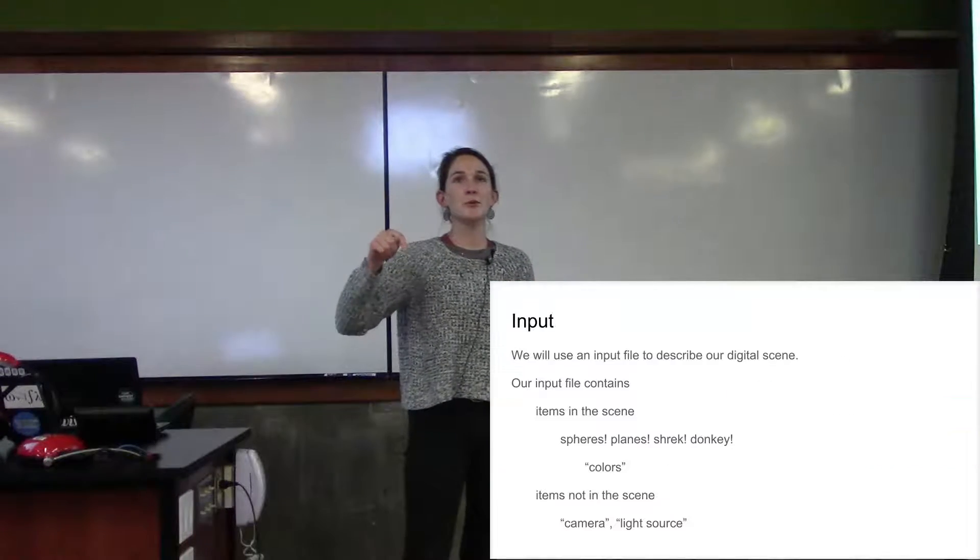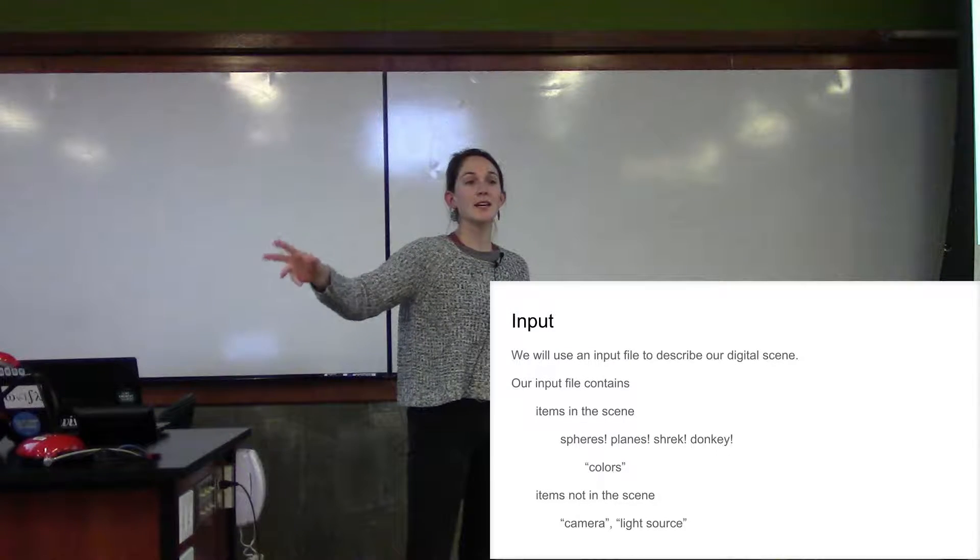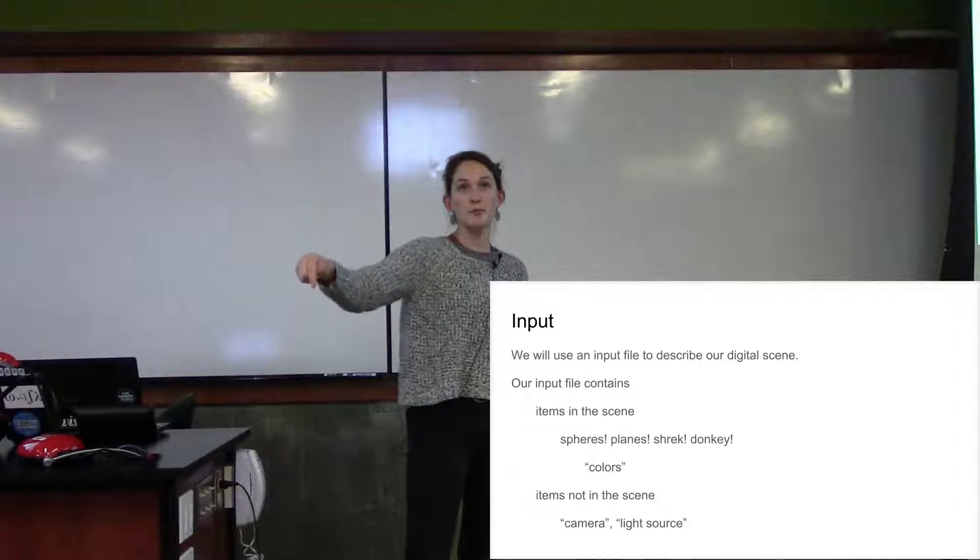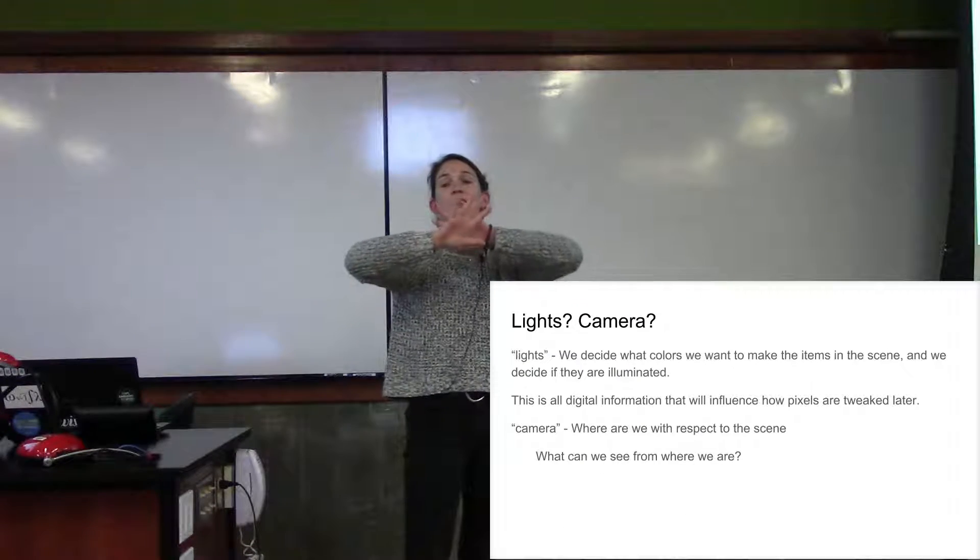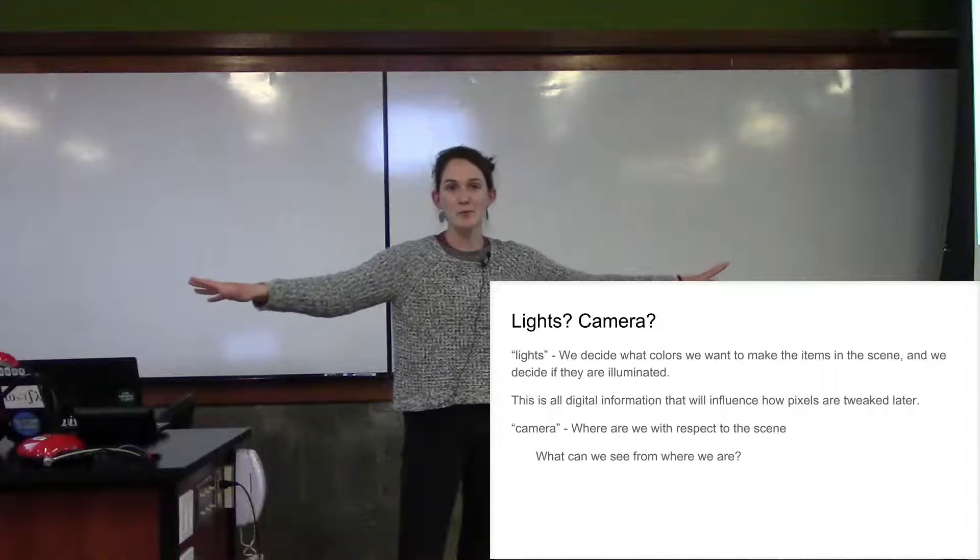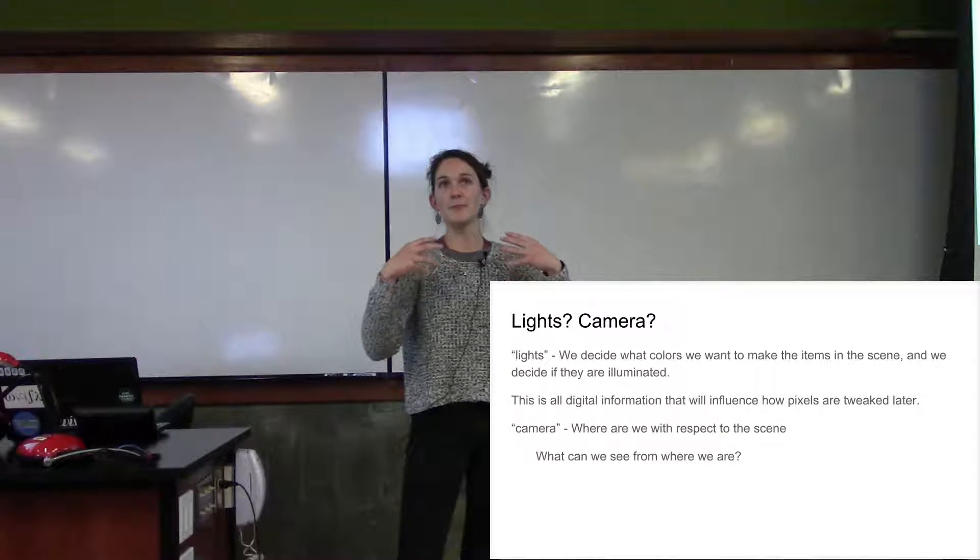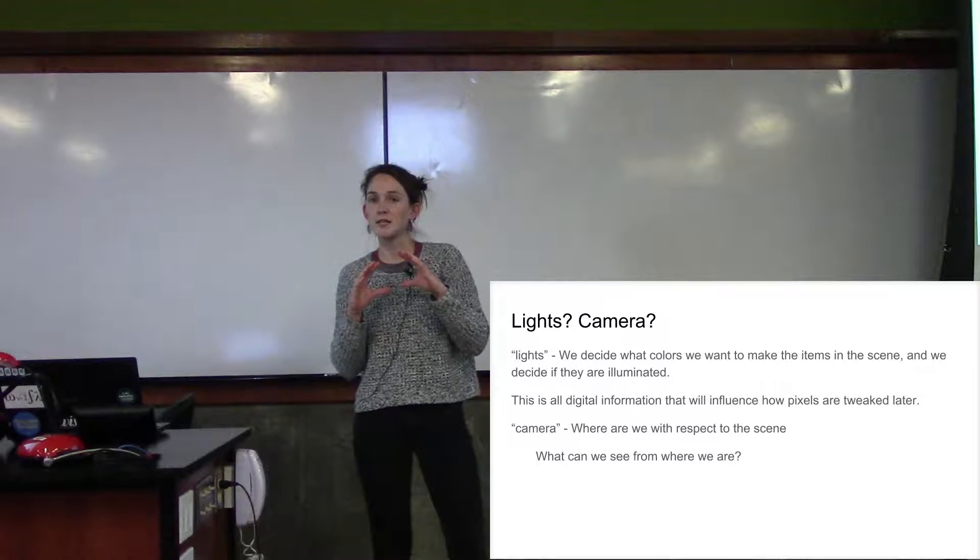So we're going to use an input file to describe a digital scene. The input file contains items in the scene and items not in the scene. So like items in the scene are like objects. Items not in the scene are like lights and camera. They're not real lights and cameras. They are fake. They are imaginary. We are deciding things about them. So like camera, like where are we with respect to the scene?